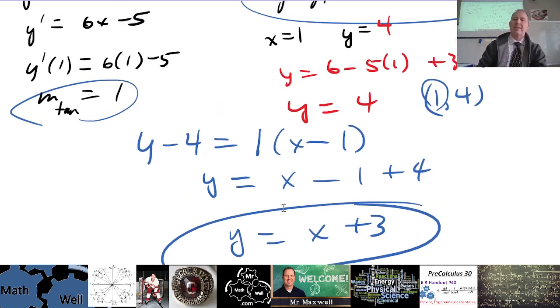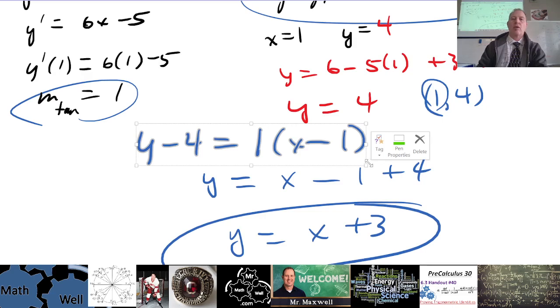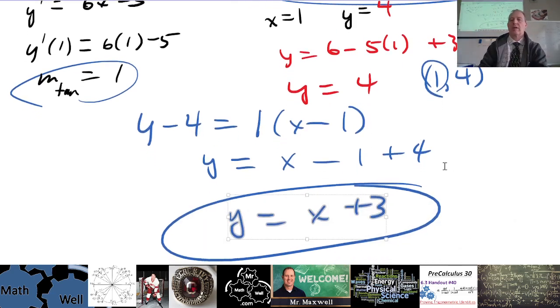Ideally this y equals mx plus b is the best format to do it in, yes, so that would be ideal. If you leave it like this, I guess not ideal, but this is much easier to graph, right? So for the most part, for some things you'd have to graph, so I always encourage y equals mx plus b.